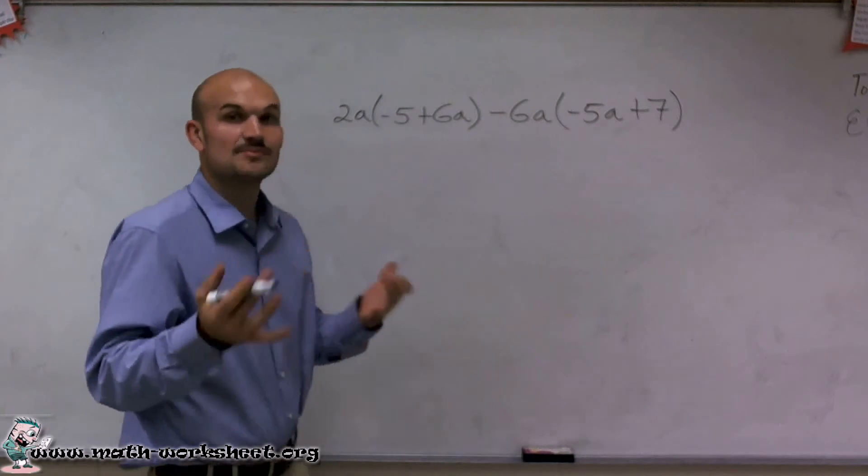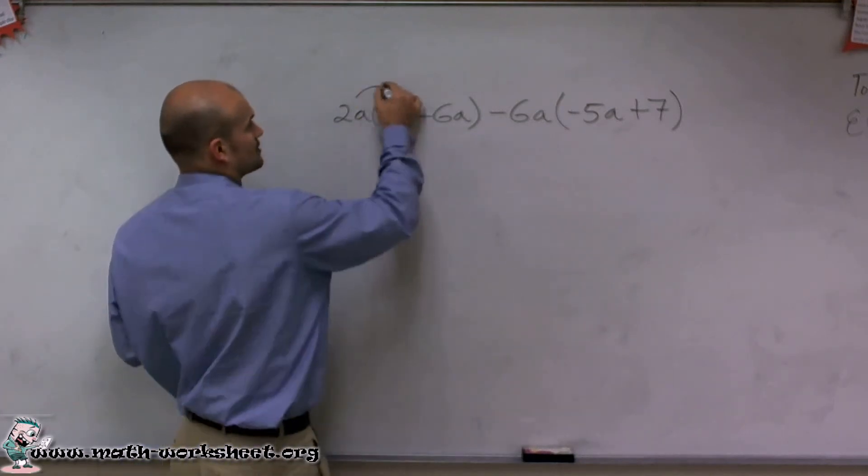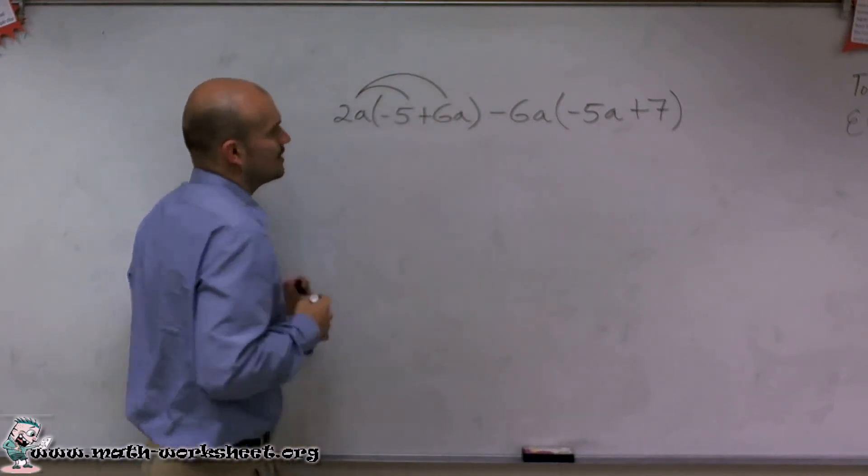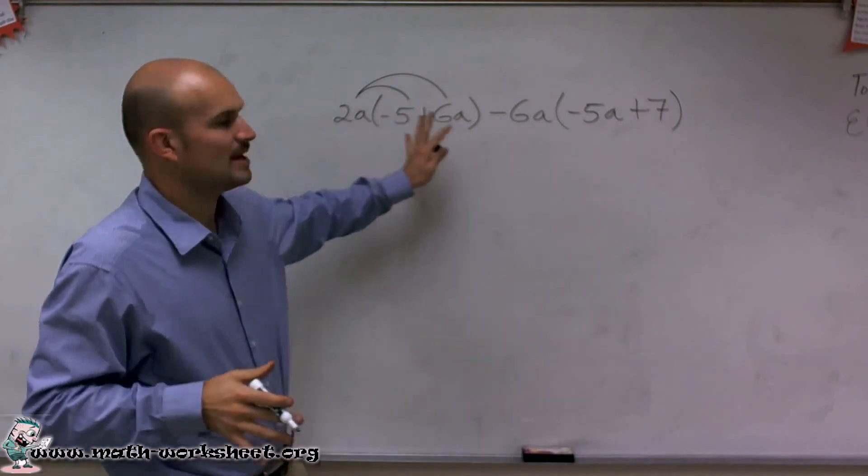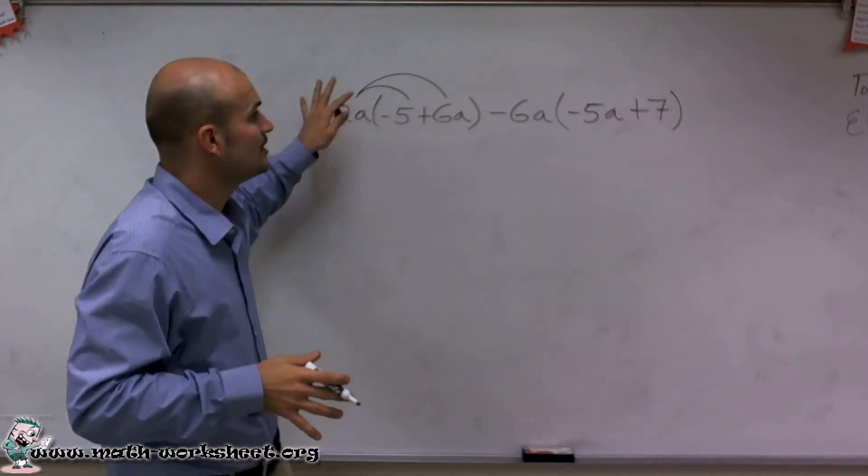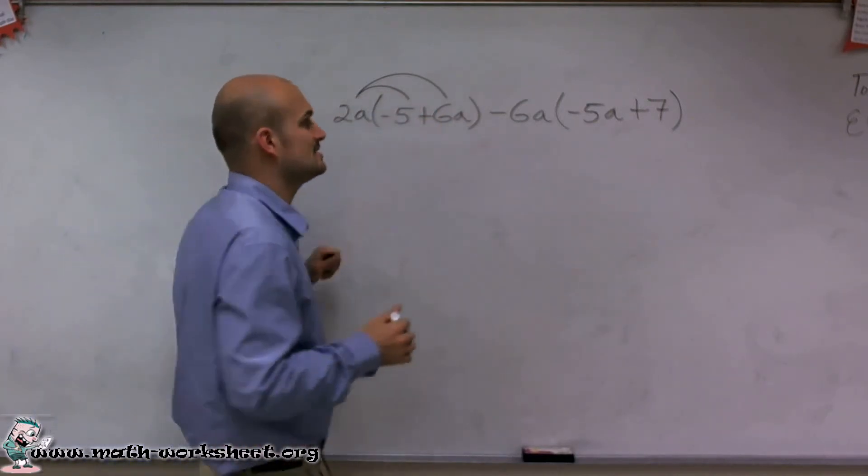The next thing I need to do is apply the distributive property. I'm going to multiply the number I'm multiplying by the parentheses. I need to make sure I multiply that number times both terms inside the parentheses.